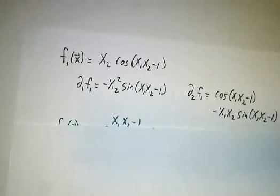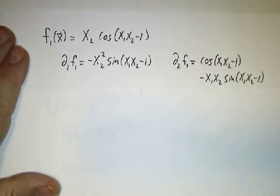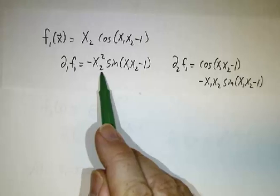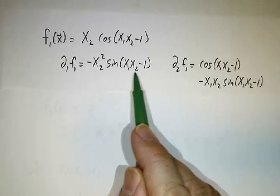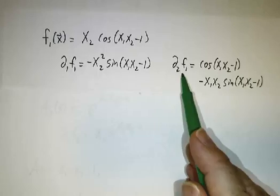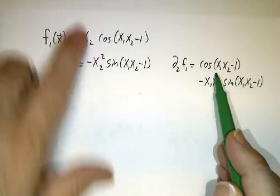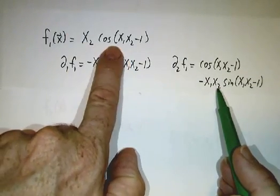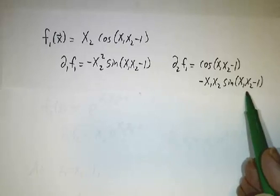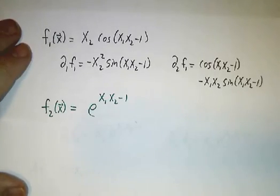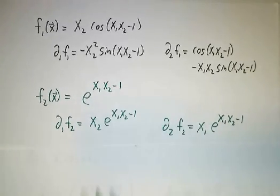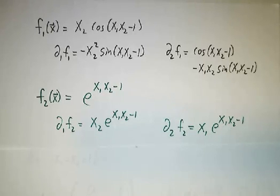Let's apply this to our particular example with the cosine and exponentials. Our first function was x2·cos(x1·x2 − 1). Taking the derivative with respect to x1 gives −x2²·sin(x1·x2 − 1). The derivative with respect to x2, by the product rule, is cos(x1·x2 − 1) plus x2 times the derivative of the cosine, giving −x1·x2·sin(x1·x2 − 1). For f2 = e^(x1·x2 − 1), we take partials with respect to x1 and x2.